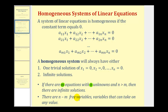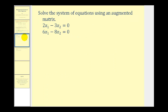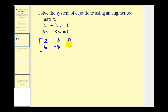Let's take a look at our examples. We want to solve the system of equations using an augmented matrix. Notice how, because the constants are equal to zero, this is a homogeneous system of linear equations. Let's go ahead and set up the augmented matrix: two, negative three, zero; and then six, negative eight, zero.